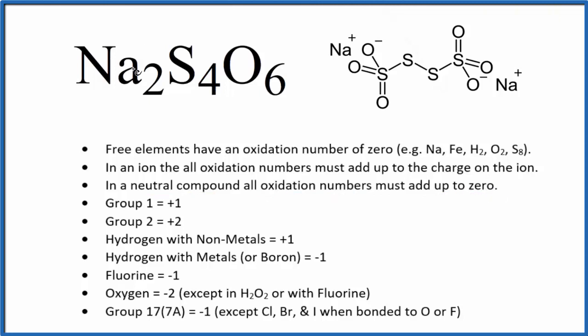We know that sodium here is in group one, so each sodium is going to be plus one. We don't know the sulfur, but oxygen is almost always going to be minus two, except when it's bonded to peroxides or the more electronegative fluorine atom. So each oxygen is minus two. Remember, all of these, when we add them up, are going to be zero because this is a neutral compound.